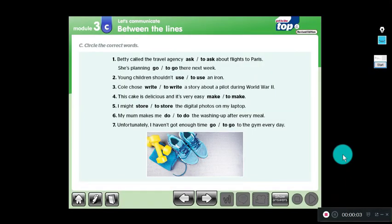Now we're going to do some exercises. In this case we have: Betty called the travel agency about flights to Paris. She's planning to go there next week. We have to analyze the context. Why did Betty call the travel agency? To ask about flights. She's planning - what is her intention? She's planning to go there next week. We use the to-infinitive.